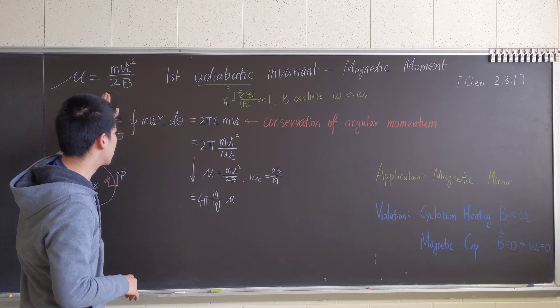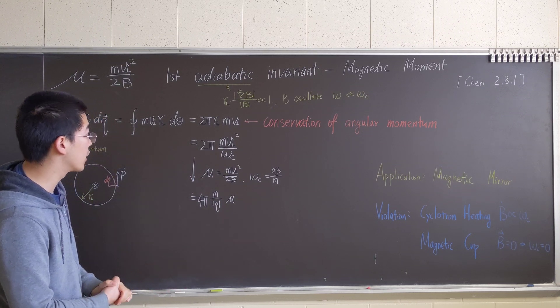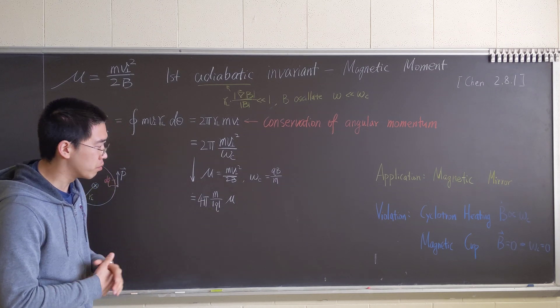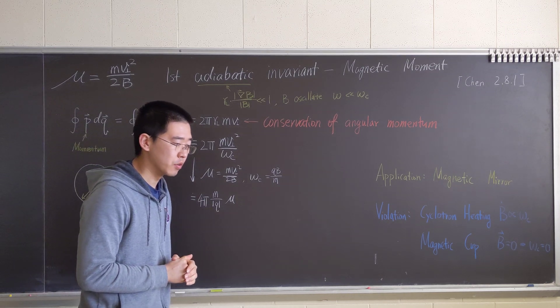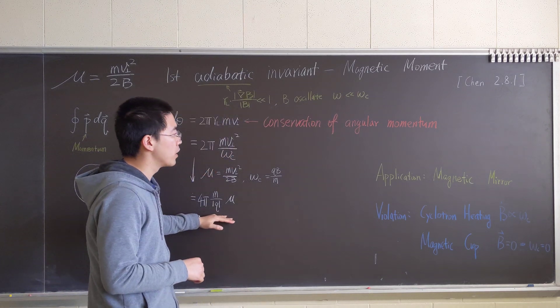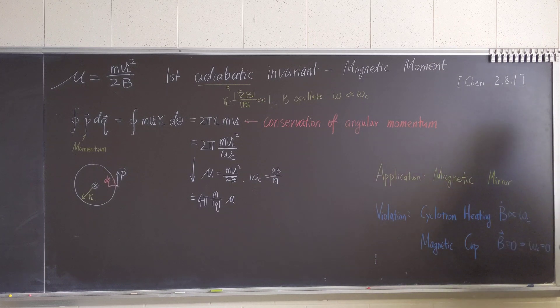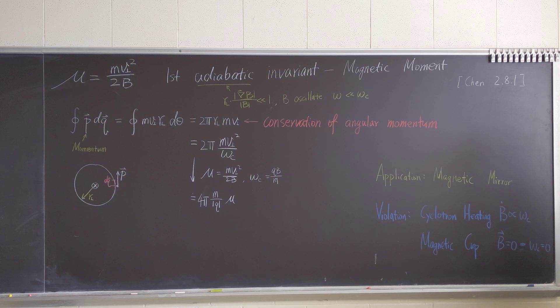Hence, this is adiabatic invariant. So m over q, which is mass charge ratio. So to keep that in mind, then we will have an application that I will talk in a different video: magnetic mirror. It can trap, using this principle, we can trap particles using magnetic field.